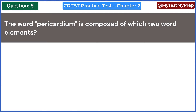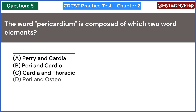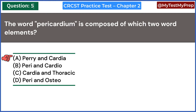The word pericardium is composed of which two word elements? A. Peri and cardia. B. Peri and cardio. C. Cardia and thoracic. D. Peri and osteo. Answer: A. Peri and cardia.